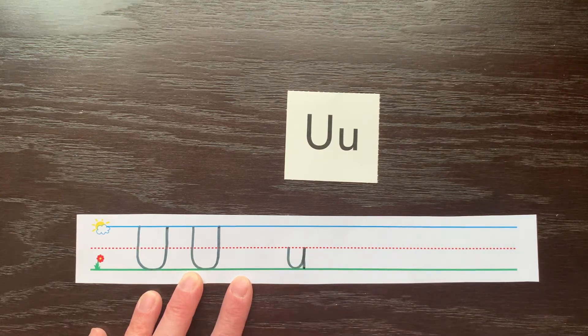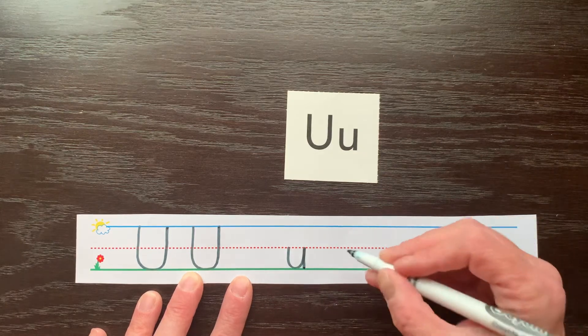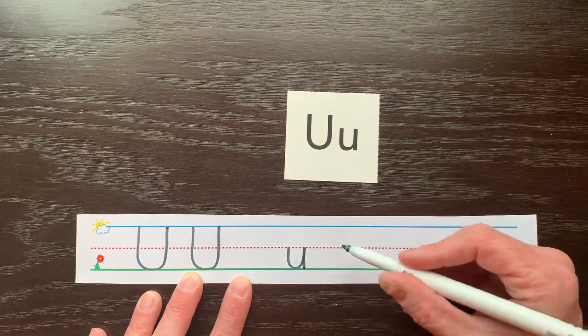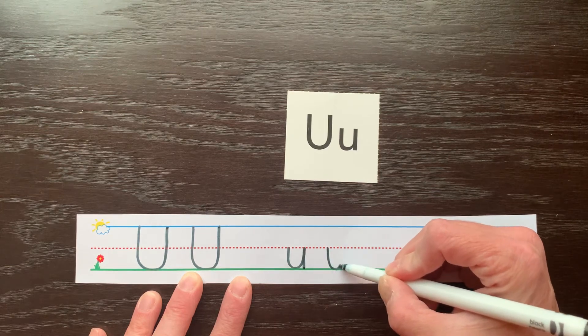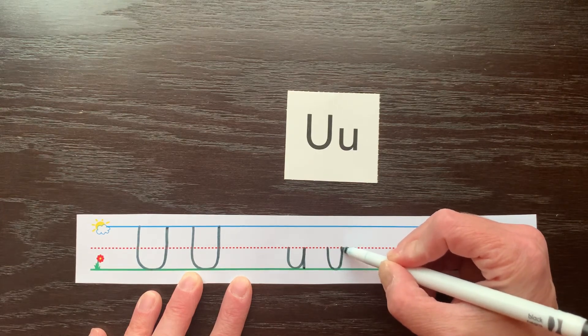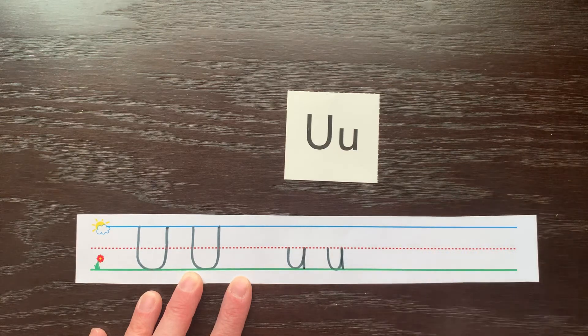This is kind of like an elevator going down on the lowercase u. Let's try again. Start in the middle, go down, curve at the bottom, straight back up to the middle, and then straight down to the ground.